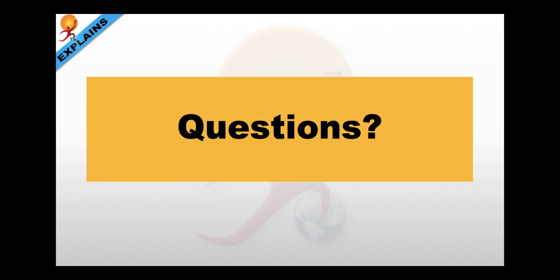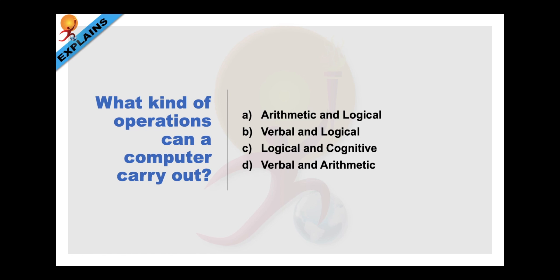We will be taking questions from the quiz and deal with the relative terminologies. What kind of operations can a computer carry out? Arithmetic and logical, verbal and logical, logical and cognitive, verbal and arithmetic. Answer is arithmetic and logical. Let us understand what it is.